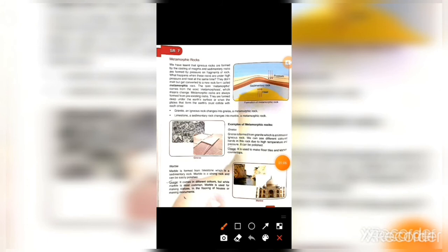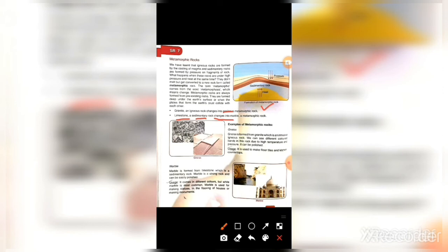Granite, an igneous rock, changes into gneiss, a metamorphic rock. Granite kya hai? Granite is an intrusive igneous rock — meaning granite ki formation earth's surface ke andar hoti hai. Jab granite rock ke upar heat aur pressure act karta hai, toh metamorphic rock ki formation hoti hai — that is gneiss. Limestone is a sedimentary rock that changes into marble, a metamorphic rock. Limestone sedimentary rock hoti hai, aur jab is ke upar heat and pressure kaam karta hai, toh it converts into marble — and marble is a metamorphic rock.